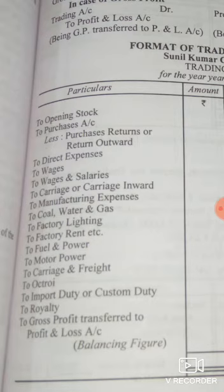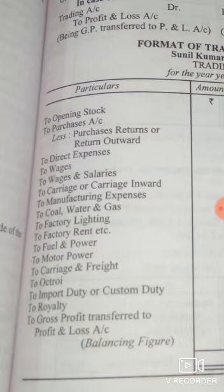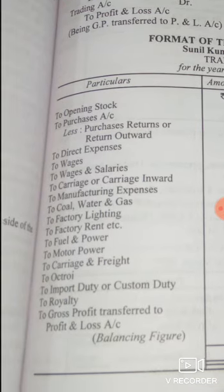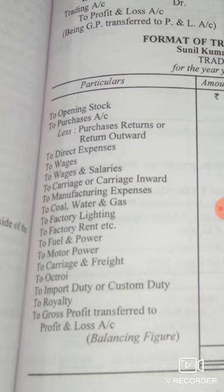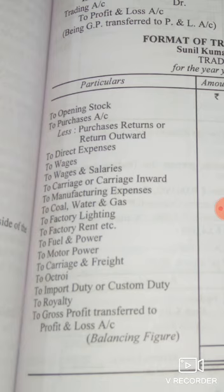The direct expenses shown in the trading account include: wages and salaries (when the question uses the term 'wages and salaries'), carriage or carriage inward, manufacturing expenses, coal, gas, water, factory lighting, factory rent — all expenses related to the factory come in this account. All expenses related to the office go to the next account, that is the profit and loss account. Other items include fuel and power, motor power, carriage and freight, octroi, import duty, custom duty, and royalty.